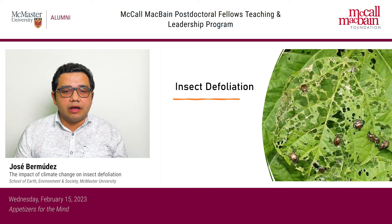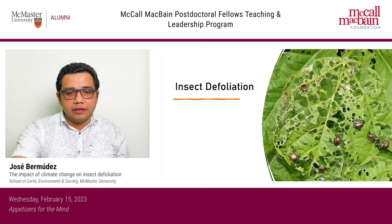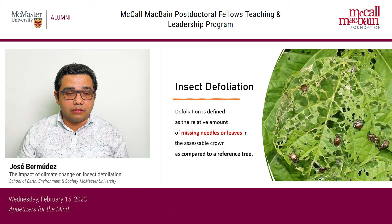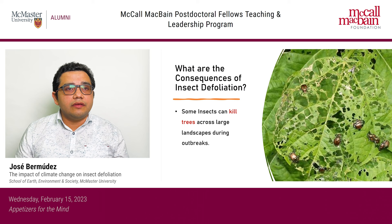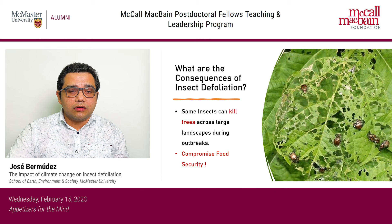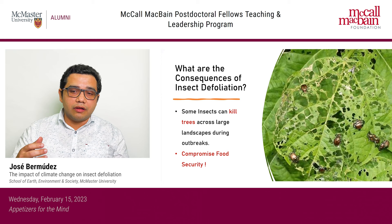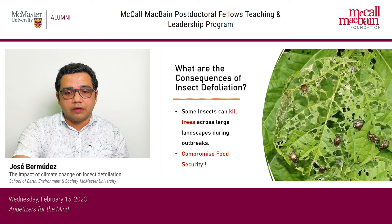In this image, we have an example of how insects eat the leaves. Formally, defoliation is defined as the relative amount of missing needles or leaves in the visible crown as compared to a reference tree. What are the consequences of insect defoliation? In the worst cases, some insects can kill trees across a large landscape during outbreaks, and it could also compromise food security. If insects outbreak and eat the leaves of agricultural crops, there will be very severe consequences because food supply is affected.